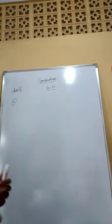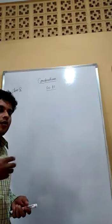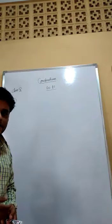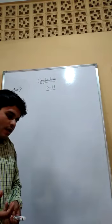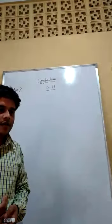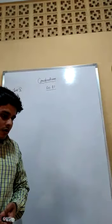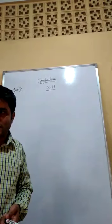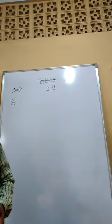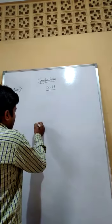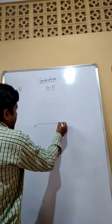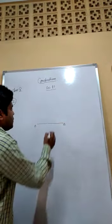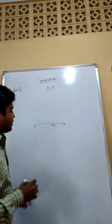First, you have to draw one triangle with sides 4 cm, 5 cm, and 6 cm. How to draw the triangle when the three sides are given? We have to take the longest side as the base — here 6 cm. So first, draw one line segment of 6 cm. This one is A and this one is B; this length is 6 cm.